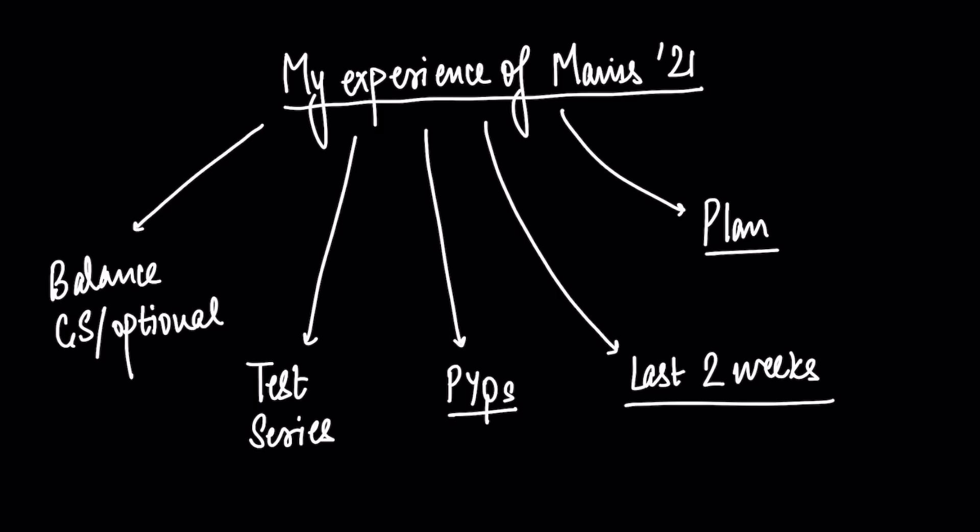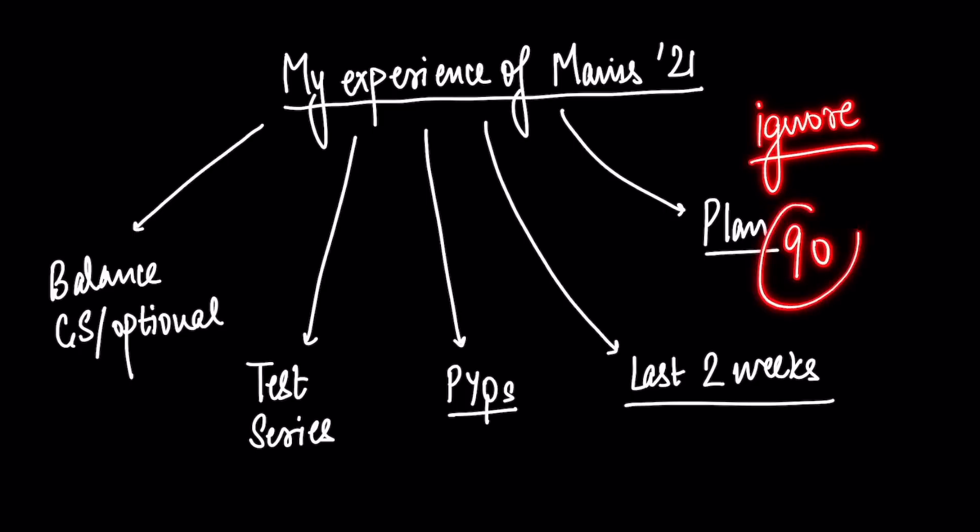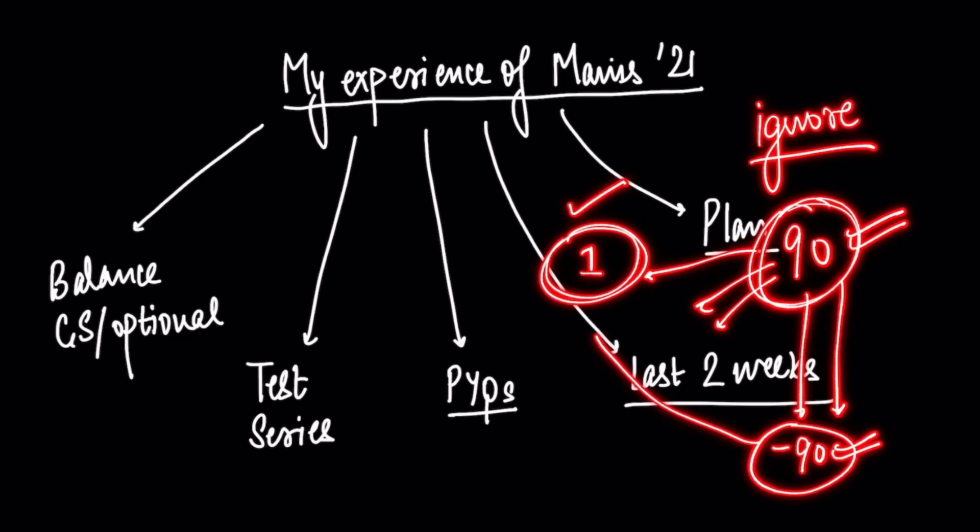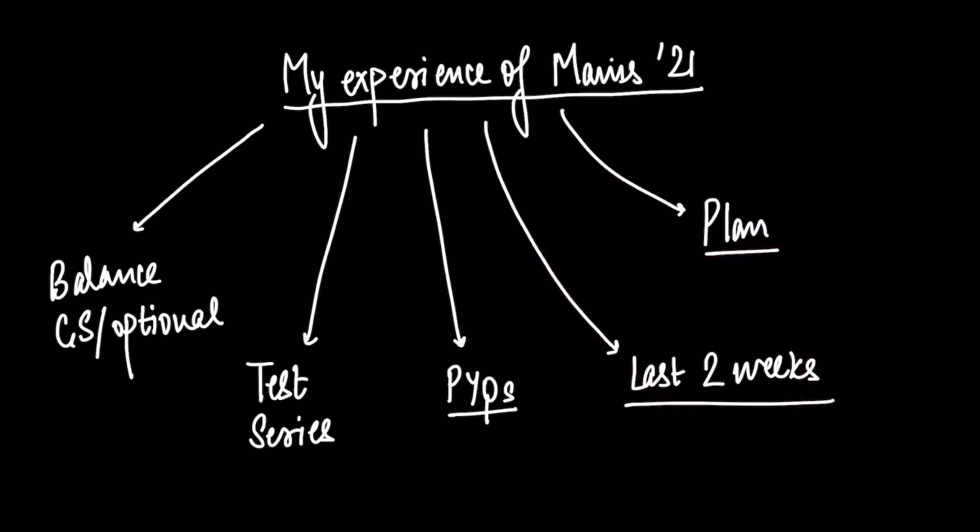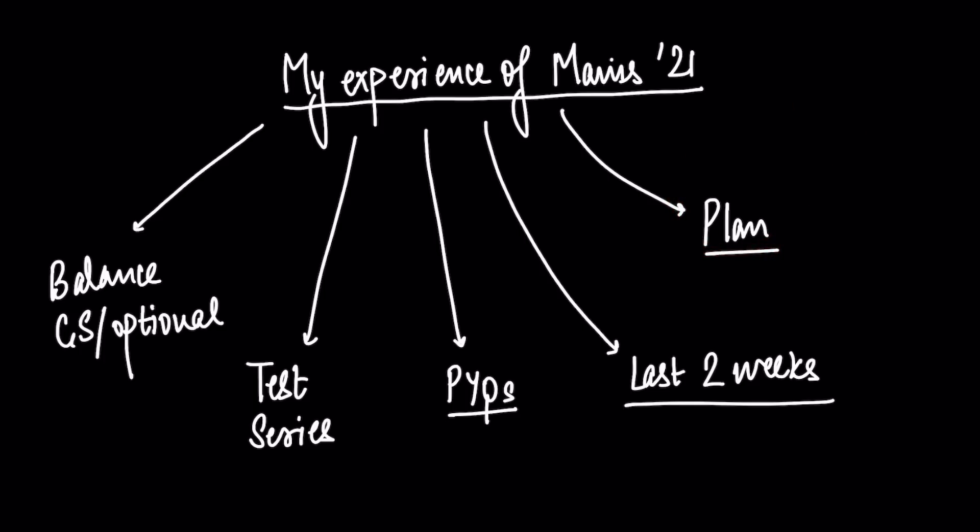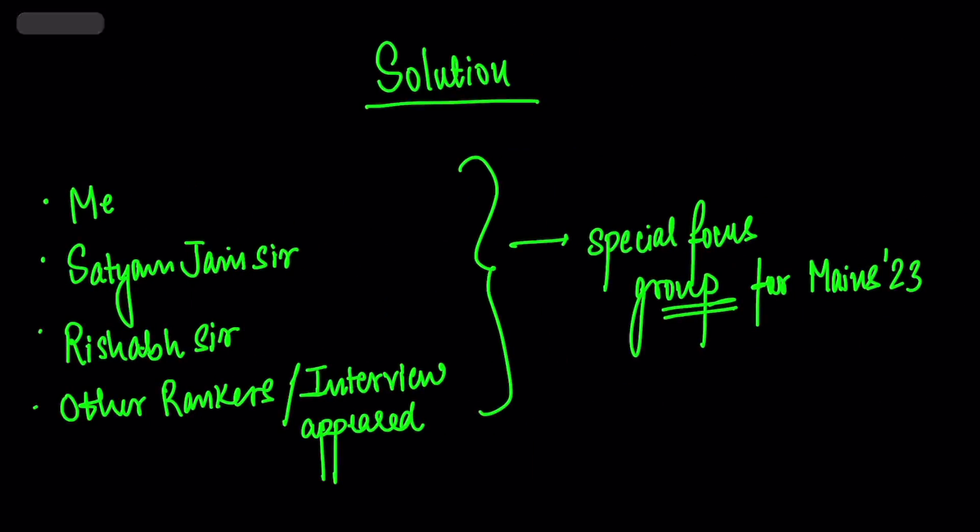Because you have started Mains preparation maybe a week or two ago. So I am sure you are facing these problems. Firstly, let me tell you these are normal. But the point is, despite them being normal, we cannot ignore them. You have approximately 90 days for Mains. And every day, if you make enough effort that your marks increase by even one, you will shift your score by 90 marks. But that will only happen with hard work. For that you need a plan in place.